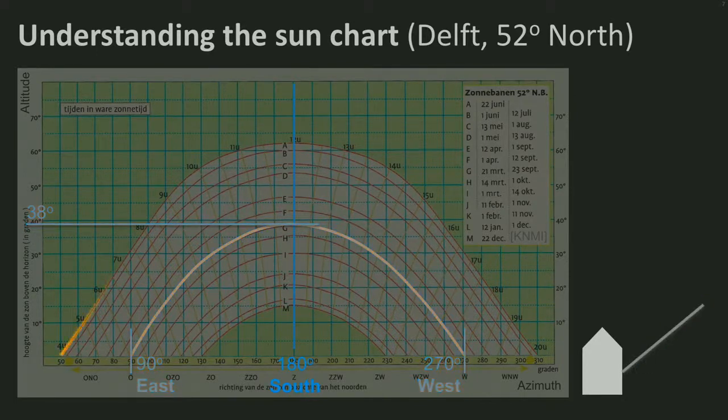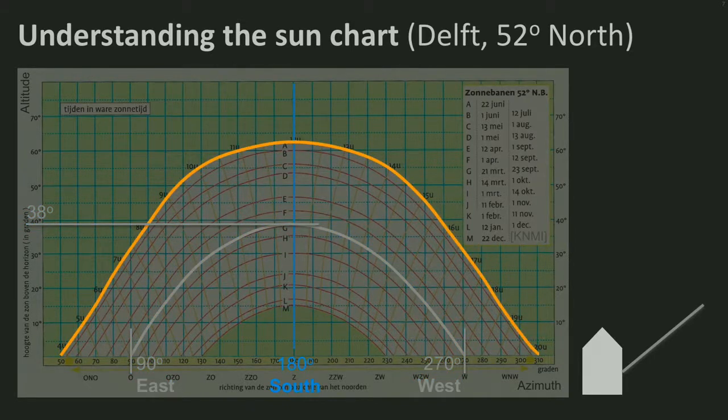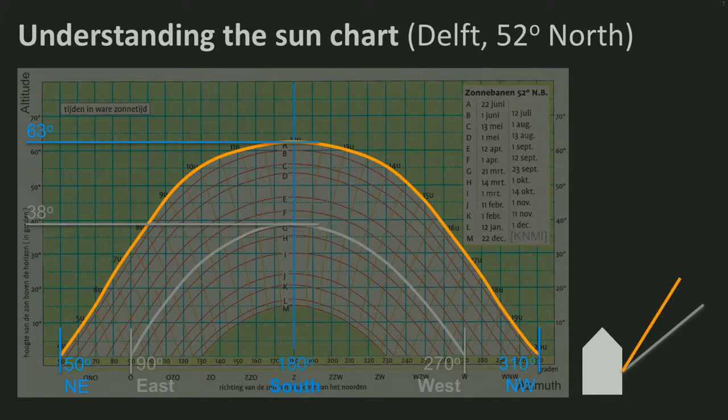In summer, on 21st of June exactly, this is the track of the sun through the sky. From around 50 degrees of azimuth northeast to 310 degrees northwest. At midday, the sun reaches the highest altitude of the year, 63 degrees. And it reaches the house at this angle.